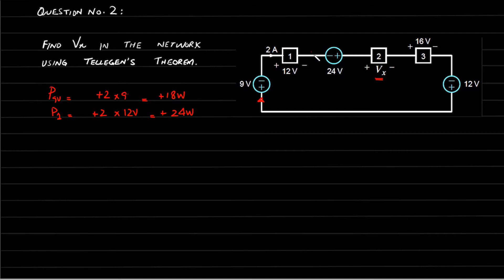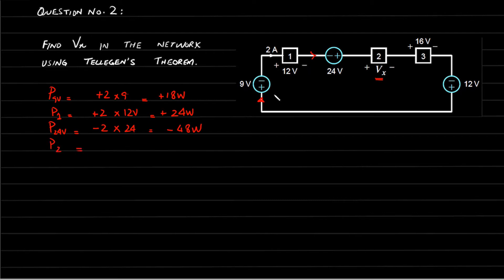Now current is entering on the negative side and leaving from the positive side, meaning that will be acting as a source. So P at 24-volt source equals minus 2 multiplied by 24, equals minus 48 watts — this is supplying power to the whole network. After that, power at component number 2: current is entering on the positive side and this is VX. So plus 2 multiplied by VX equals 2VX, and VX is unknown.